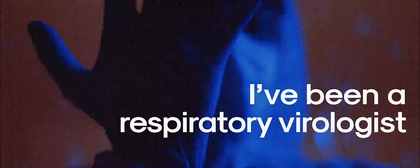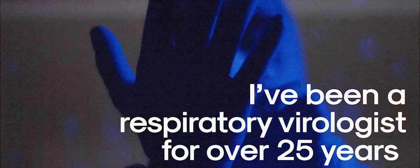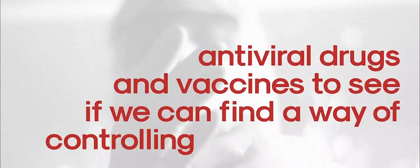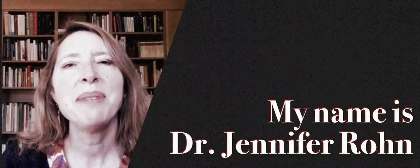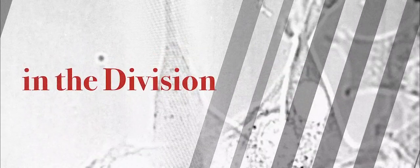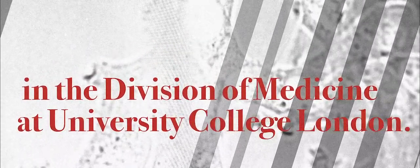My name is Dr. Rob Lampkin-Williams. I've been a respiratory virologist for over 25 years and we're working on antibodies that can help fight the virus, antiviral drugs and vaccines to see if we can find a way of controlling this outbreak. My name is Dr. Jennifer Rohn and I'm a cell biologist and a research group leader in the Division of Medicine at University College London.